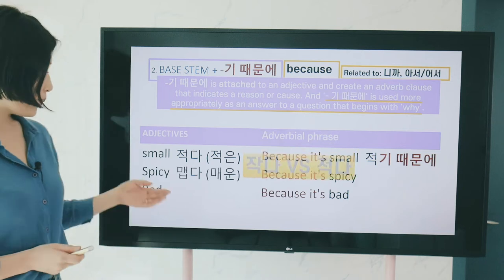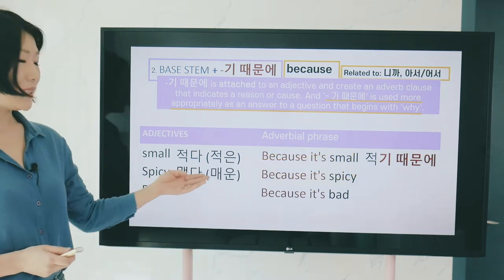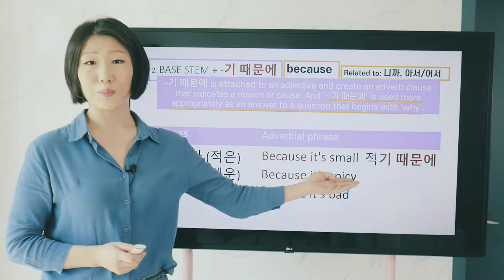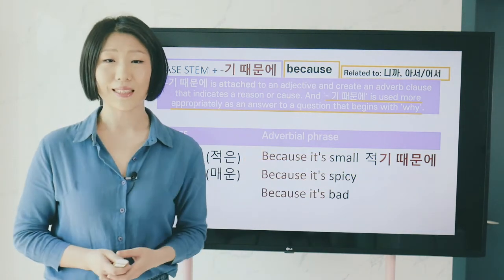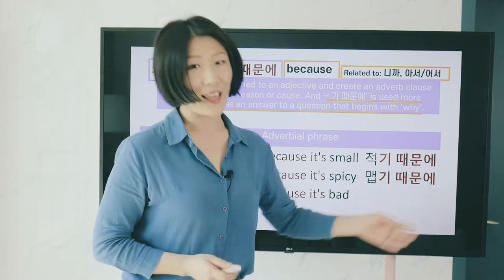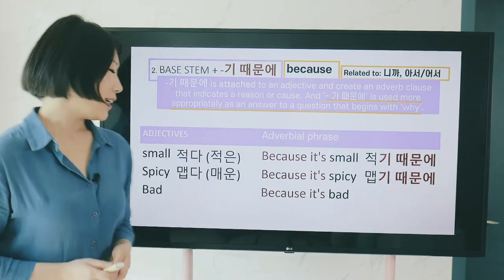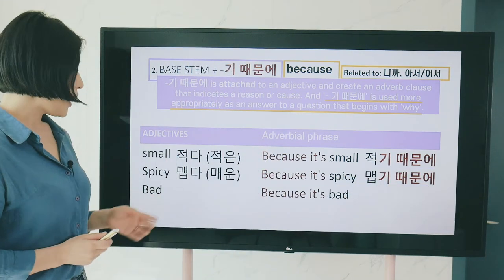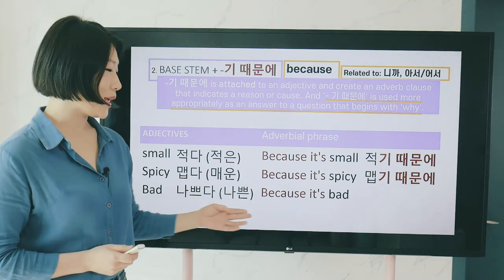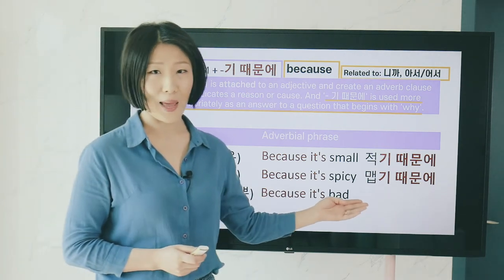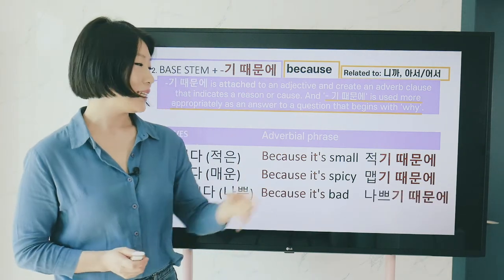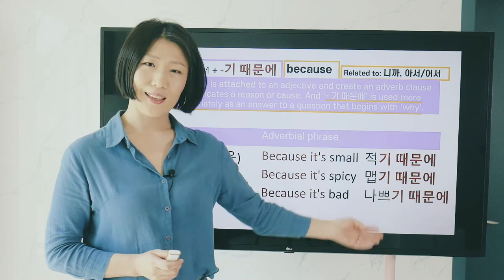맵다 means spicy, and 'because it's spicy' is 맵기 때문에. 나쁘다 means bad, and 'because it's bad' is 나쁘기 때문에.